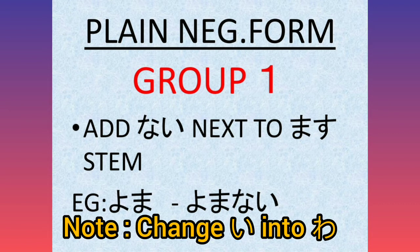For example, if you have Yomimasu, you cancel the last part of the stem, then add the new ending. If you apply the E-Wa-Nai rule: change E into Wa, then add Nai — you get E-Wa-Nai. That is how you form the plain negative for Group 1 verbs.